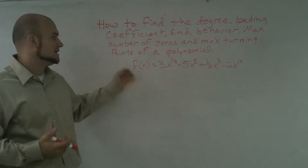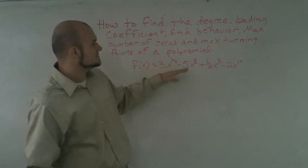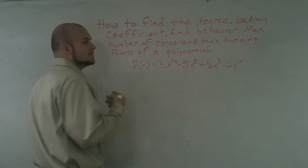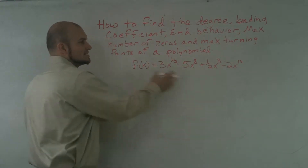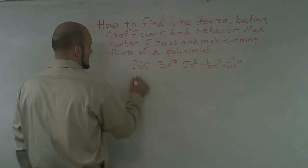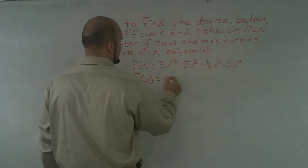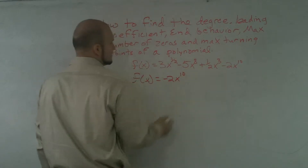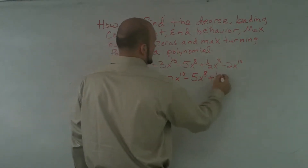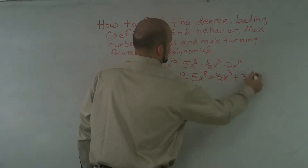The first thing I notice about this polynomial is that it is not in descending form by degree. So I need to rank the exponents from highest to lowest. Therefore: f(x) = -2x^10 - 5x^8 + (1/2)x^3 + 3x^(1/2).